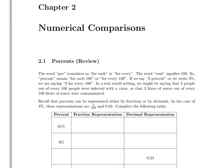Recall that percents can be represented either by fractions or by decimals. In the case of 3%, these representations are 3 out of 100 or 3 hundredths. And if we write this fraction as a decimal, it would be 0.03.